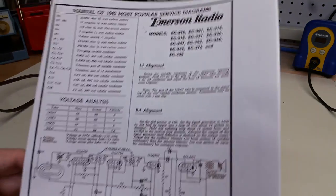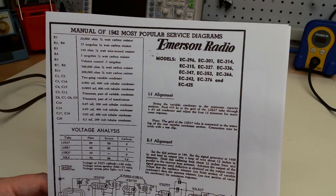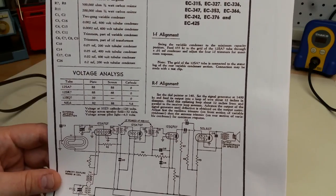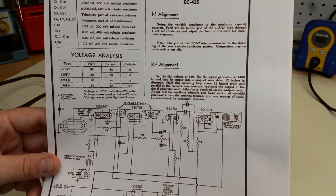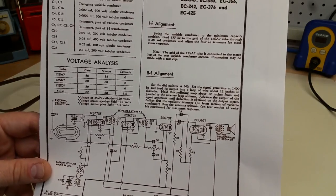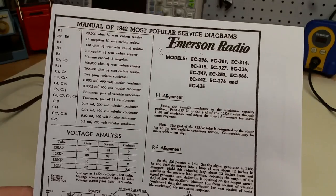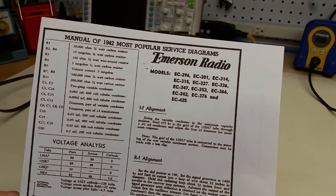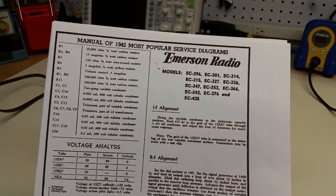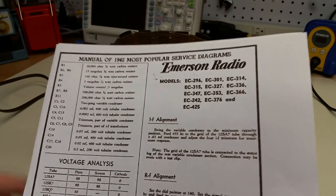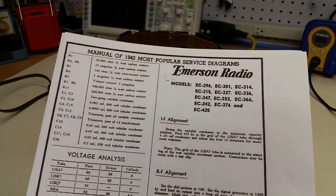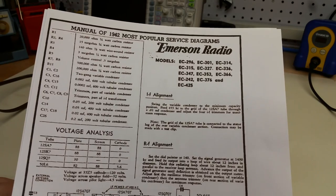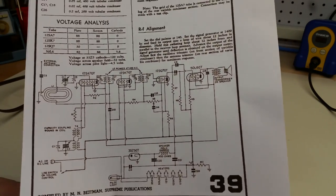I was able to find online through two sources a schematic. One of these is from the Beitman Supreme Publications book entitled Manual of 1942 Most Popular Service Diagrams. This is one page that has the parts, most of them, not all of them. Interestingly, the voltages at different tie points, alignment procedure, and then of course the schematic.